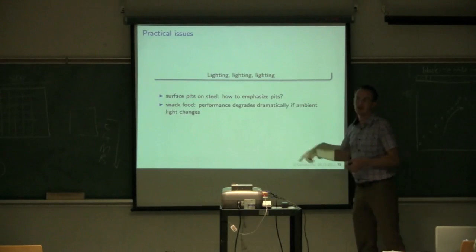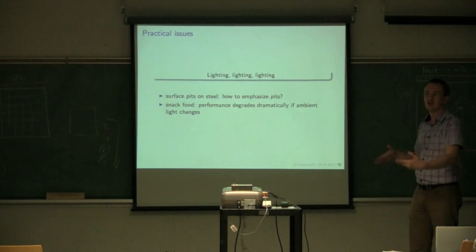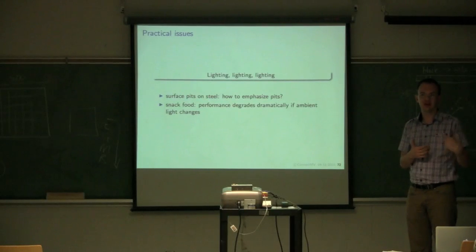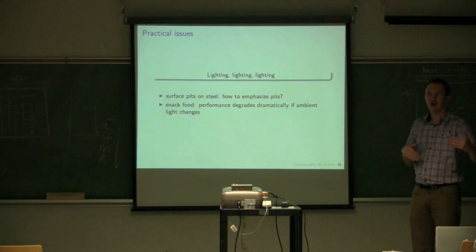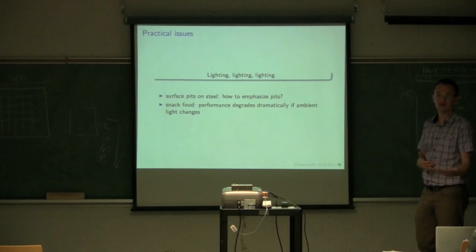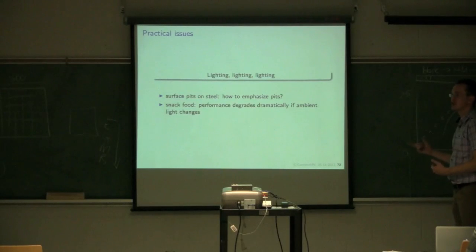Jude emphasized that because they rubbed ink onto the steel and then wiped it off. But if you wanted to examine those steel sheets practically thinking, you've got the steel running by on a high speed line, you don't have the ability or the cost even to put ink on and wipe it off again. So how might you try to do your lighting so that it actually emphasizes the pitting for you?